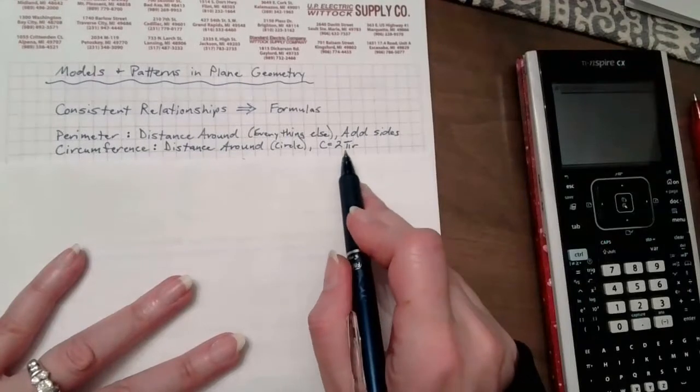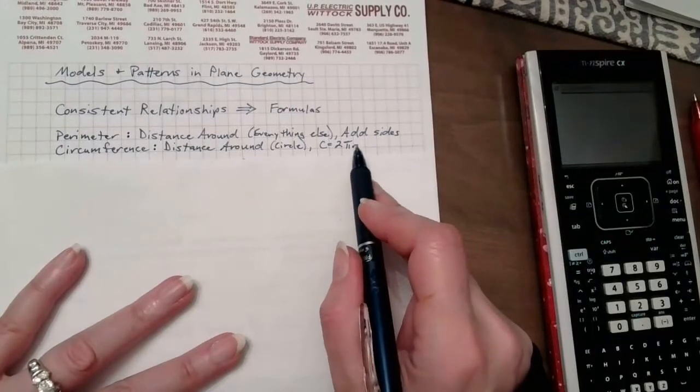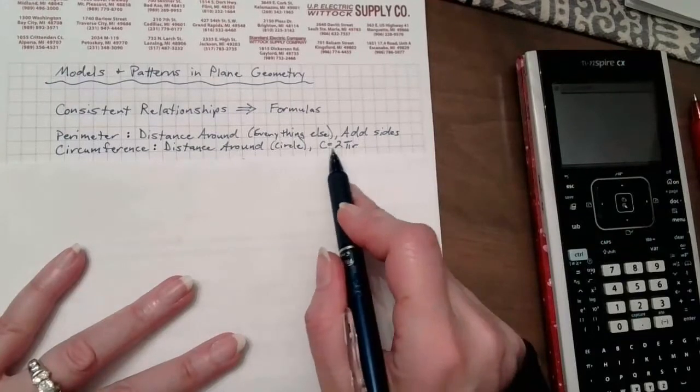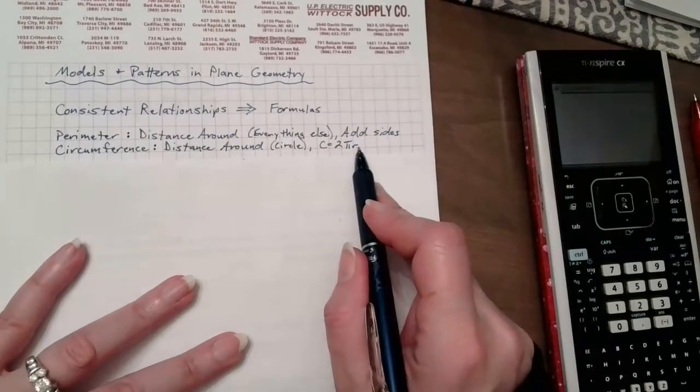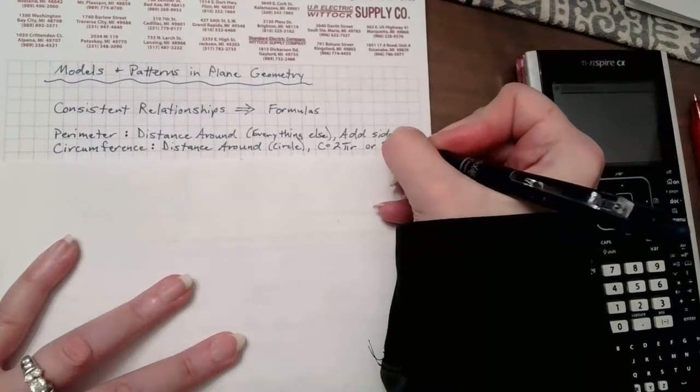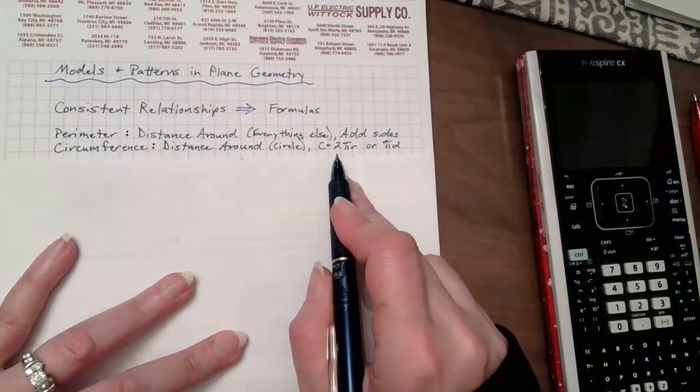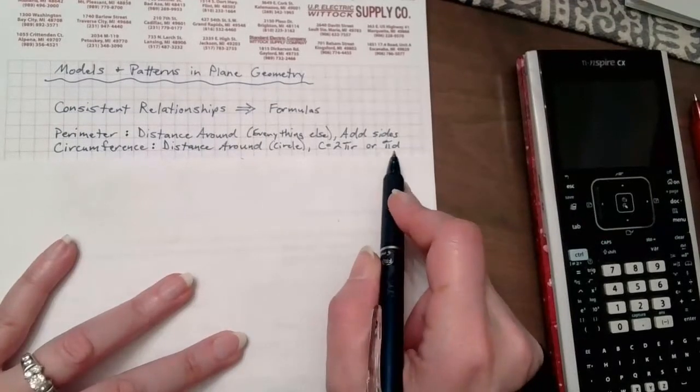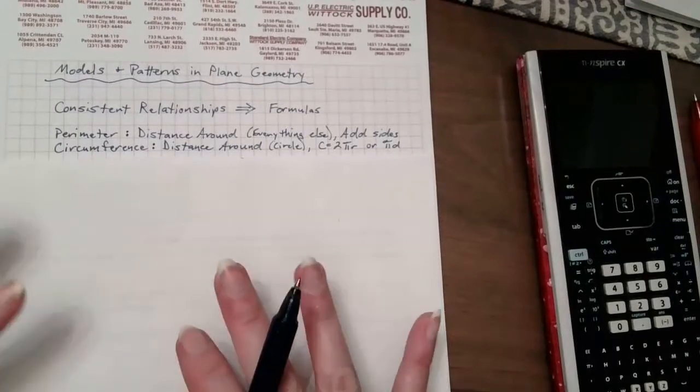Some of you are saying, hey, isn't there another formula? Yes, yes, yes. Alright, so think about what you know about circles. R is radius. If I have 2 radii, radii is the plural for radius, 2 radii is the same as 1 diameter. So you could also use pi times diameter, and that's the same thing as having 2 pi r, depending on what information you're given. But both of those will give us the distance around a circle.